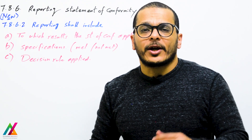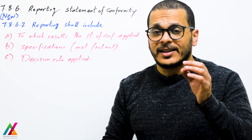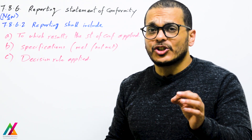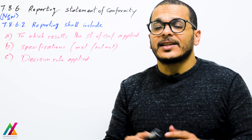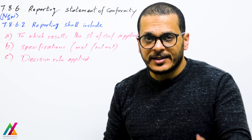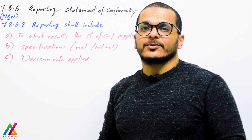The final result plus or minus measurement uncertainty, whether the result is accepted or rejected, according to which specification, standard, or guideline, the type of decision rule applied, and the associated risk — all of these shall be included. The risk will be explained in detail in the next lecture.